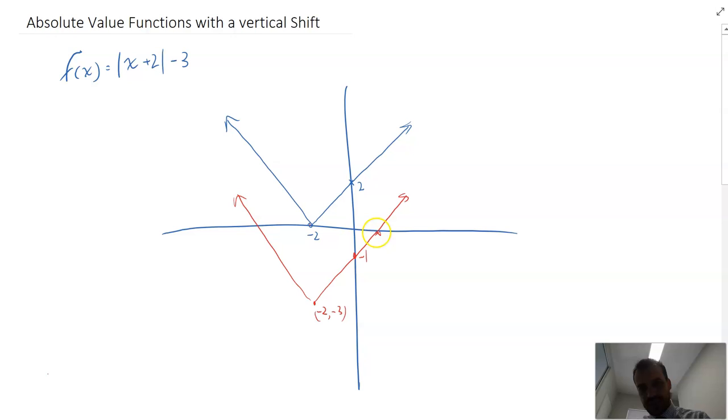Now I can draw in my x-intercepts there. That's going to be like negative 5, and that's going to be negative 1 there.